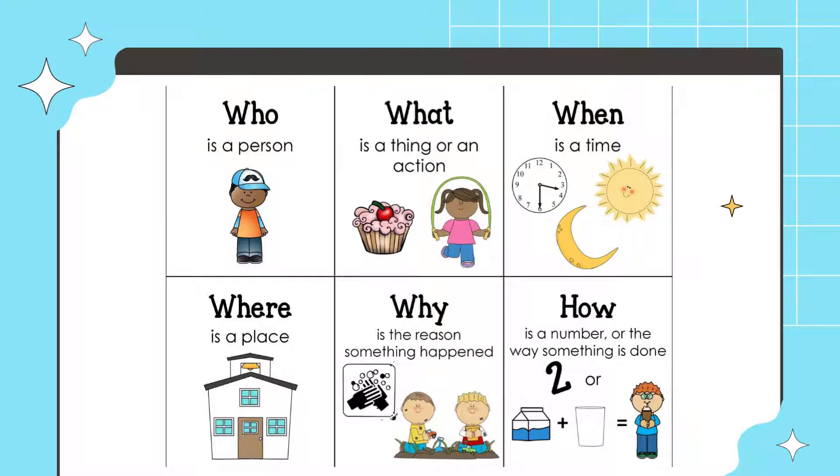Like where is Sekolah Rendah Dato Osman? Then you can answer in Lambak Kiri. Why is the reason something happened. Why is that boy so dirty? Because he didn't shower yet or because he was playing in the mud. Last one, how. How is a number or the way something is done, like how much milk do I need? Two cups.